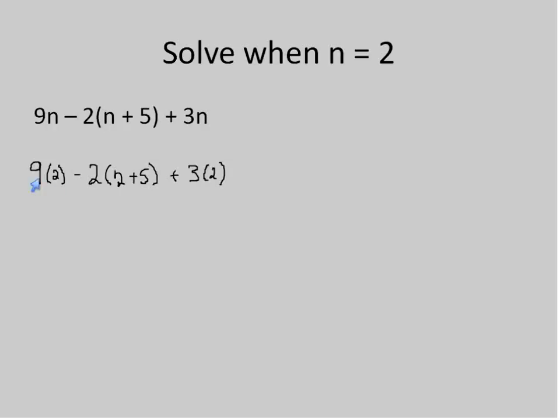Now, like I said earlier, we're going to want to make sure to do what's inside the parentheses first. But there's an implied parentheses around these terms, 9n. So we can solve them at the same time. 9 times 2, 18. And that's going to be separated by this. But we solve what's inside the parentheses. 2 plus 5 is 7. And then 3 times 2, which is 6.